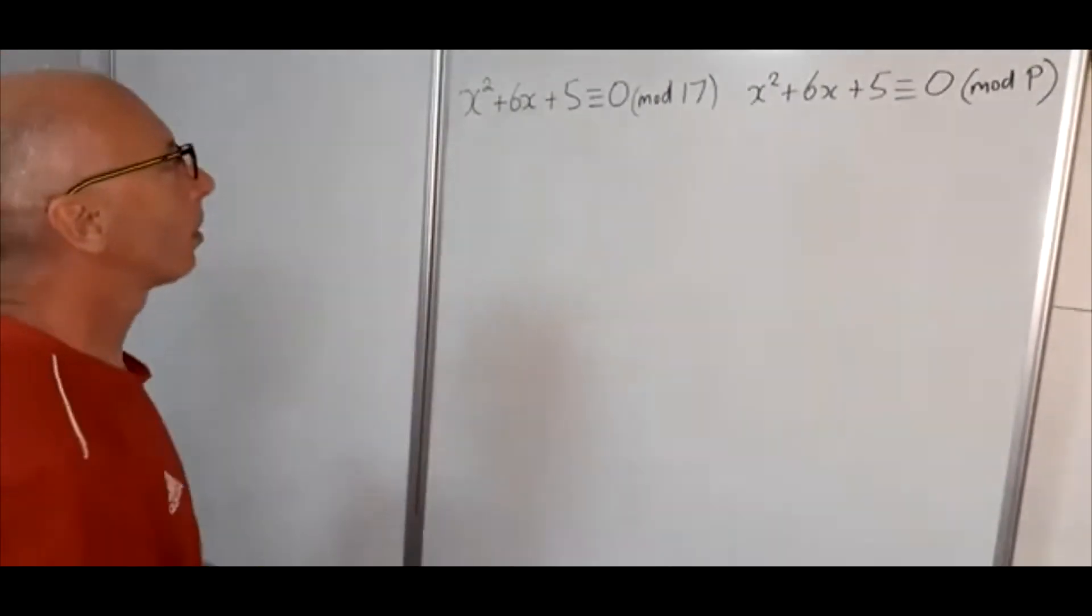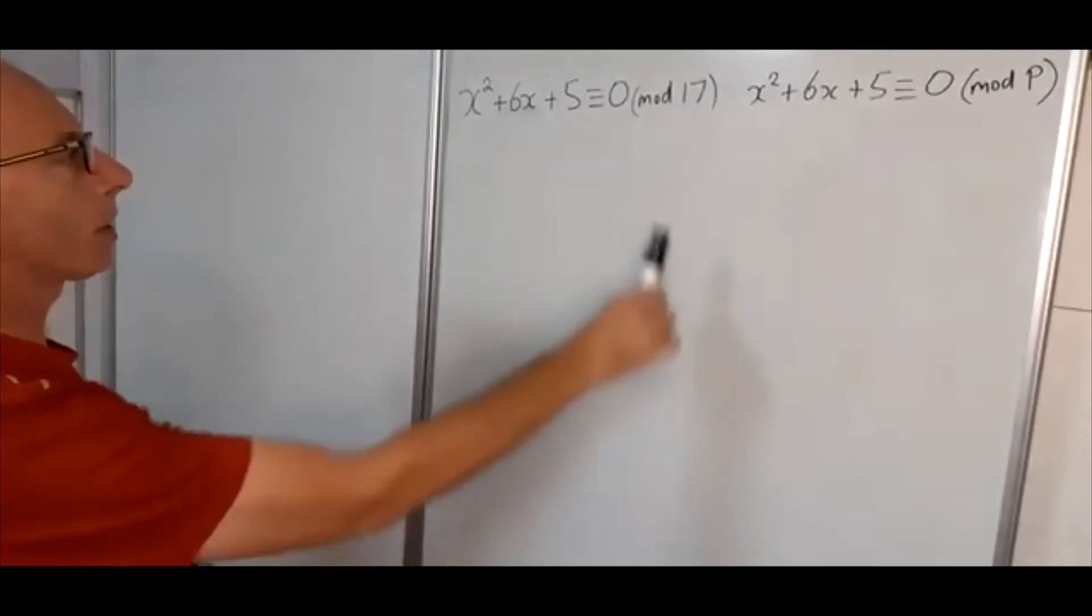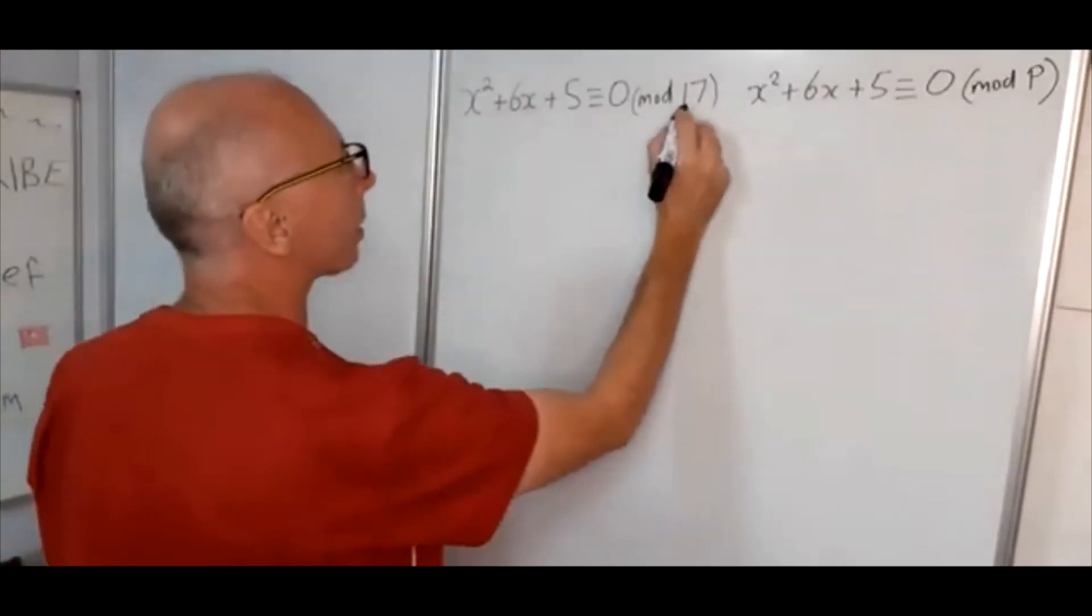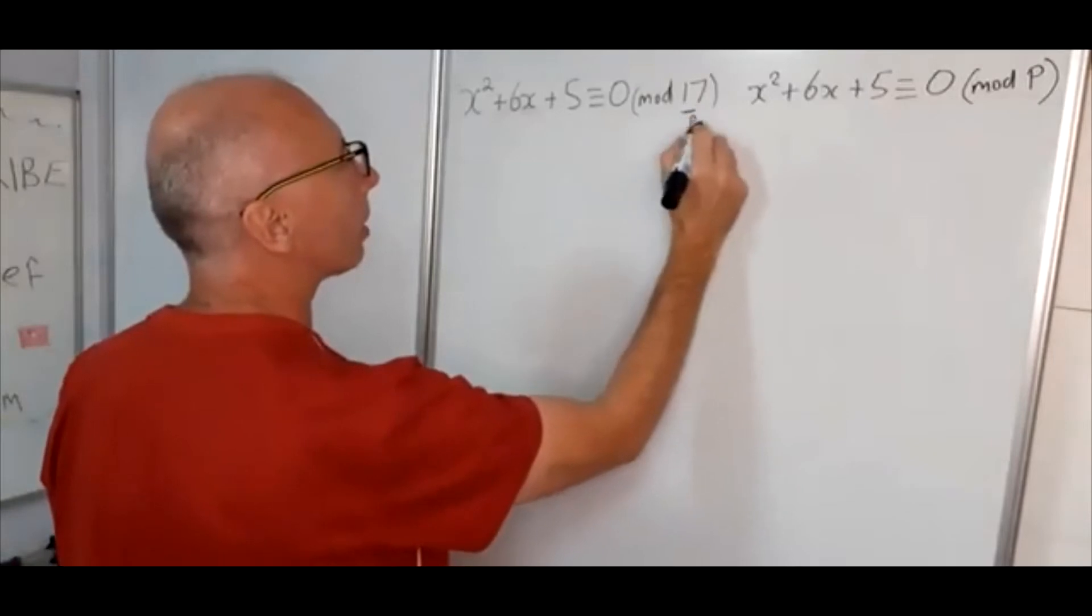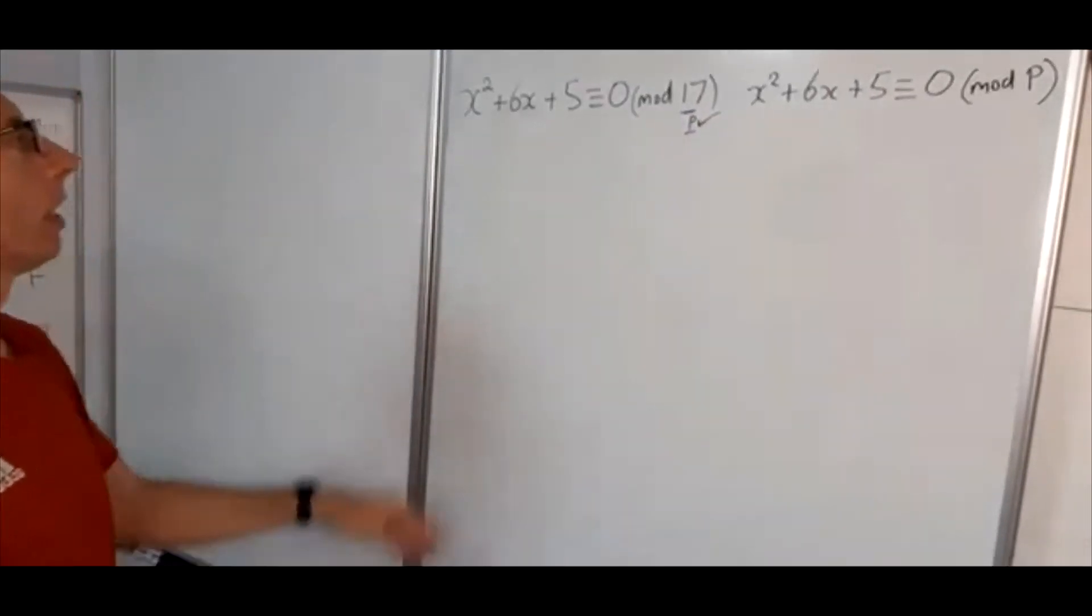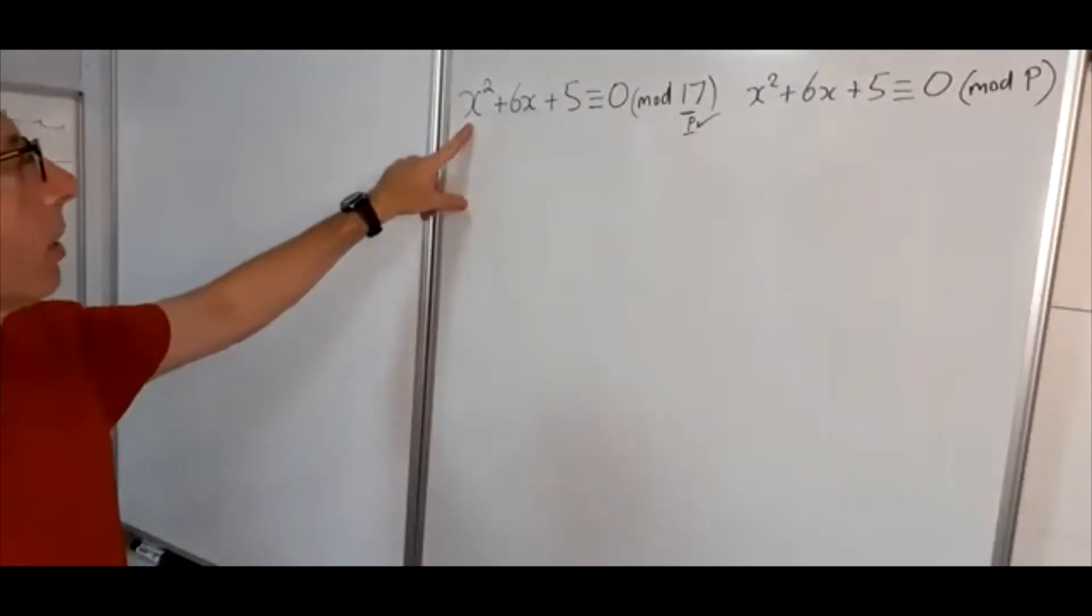So first things to do to solve this, we see we've got the modulus here is a prime. So that is a prime number, so that's good. Next thing here we've got a quadratic. So what we're going to do is we're going to complete the square first.